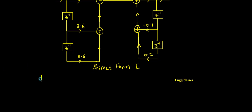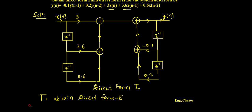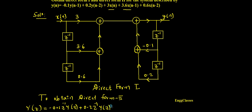To obtain the Direct Form 2 structure, I have to take the Z-transform of the given equation. Taking the Z-transform: y(n) becomes Y(z), -0.1·y(n-1) becomes -0.1·z⁻¹·Y(z), +0.2·y(n-2) becomes +0.2·z⁻²·Y(z), then +3·x(n) becomes 3·X(z), and +3.6·x(n-1) becomes 3.6·z⁻¹·X(z).